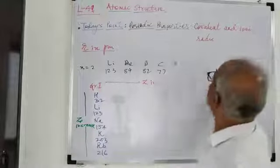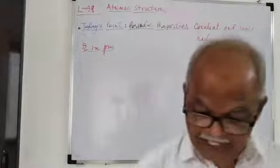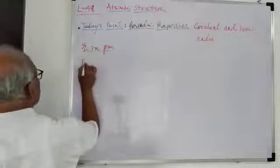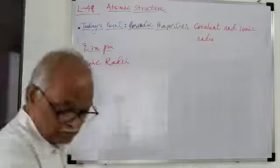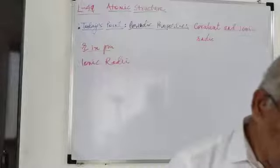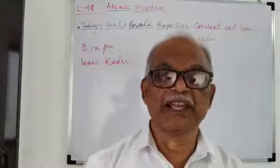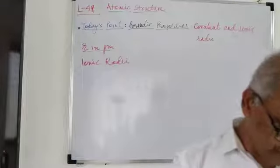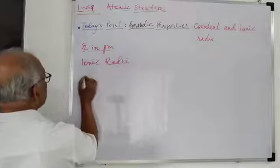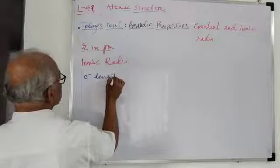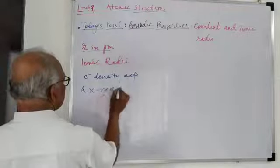If we consider the radii of ions — that is, ionic radii — the data obtained for ionic or crystal radii is based on X-ray diffraction data and electron density maps. This data is provided based on electron density maps and X-ray diffraction data.